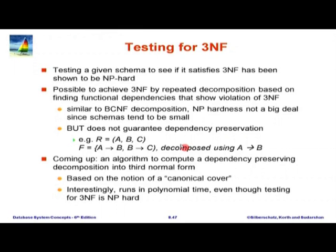What Bernstein's algorithm does is take the given set of functional dependencies, do a little bit of cleaning — remove unnecessary parts, minimize it in some sense — and from this minimal set, create a set of relations. The minimal set is equivalent to the original set; the closure is the same. Therefore, it is very easy to see that it is dependency preserving. It has also been shown to be in 3NF. The algorithm runs in polynomial time, unlike all other algorithms which are potentially NP-hard.